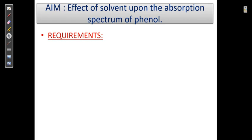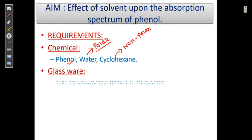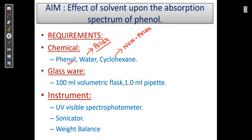The requirement for this experiment: the chemicals we require are phenol, water, and cyclohexane. Phenol is our organic compound, water is our polar solvent, and cyclohexane is our non-polar organic solvent. For glassware, we require a 100 ml volumetric flask and a 1 ml pipette. The instrument required is a UV-visible spectrophotometer, a sonicator, and a weighing balance.